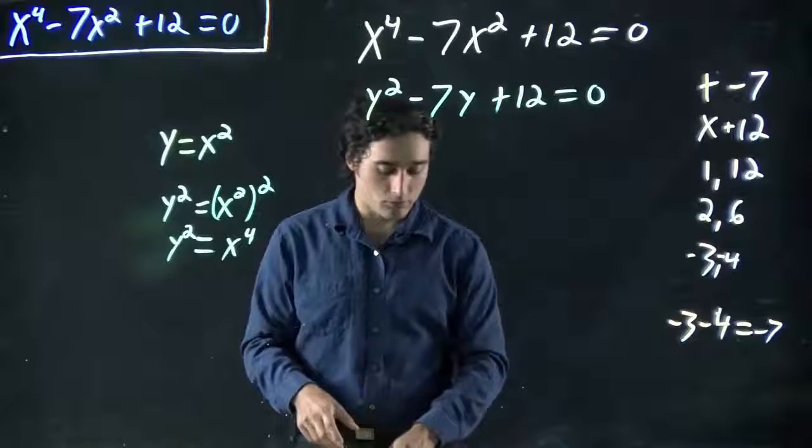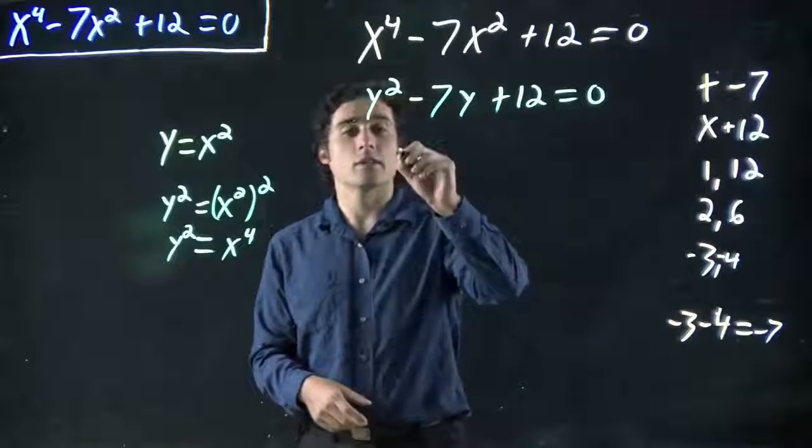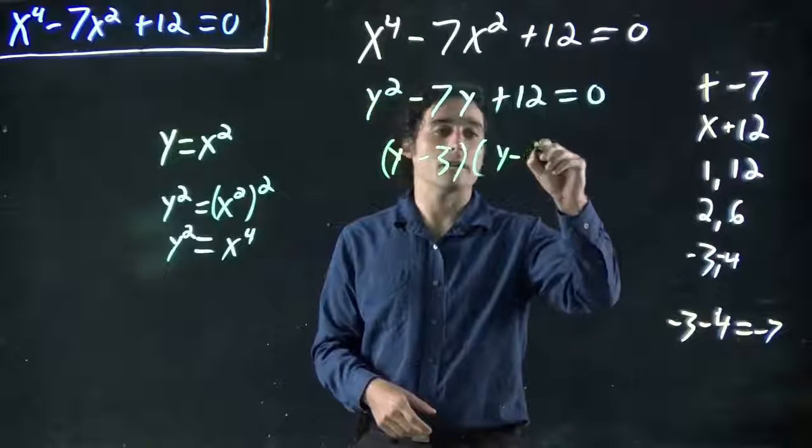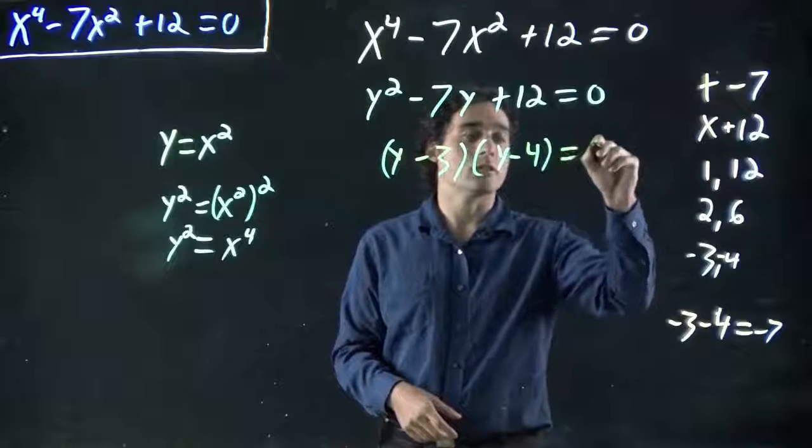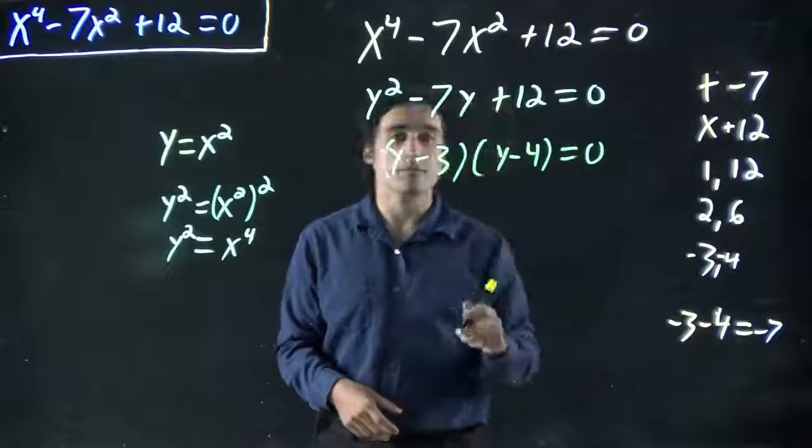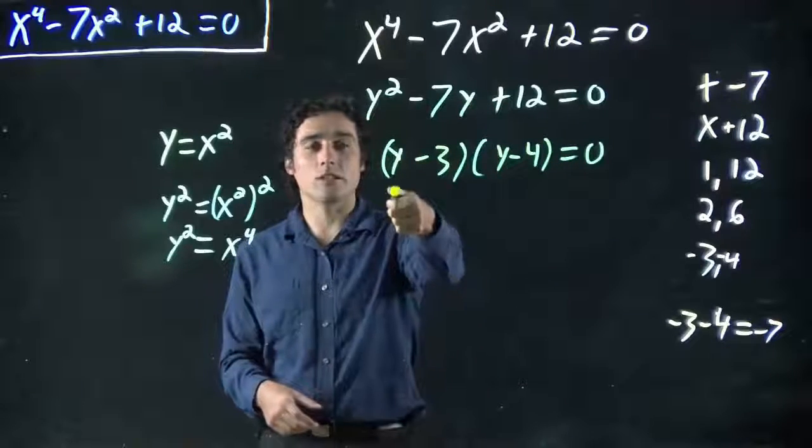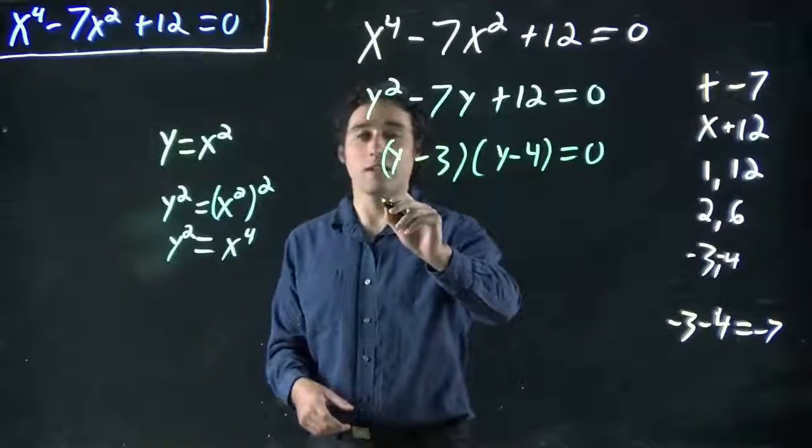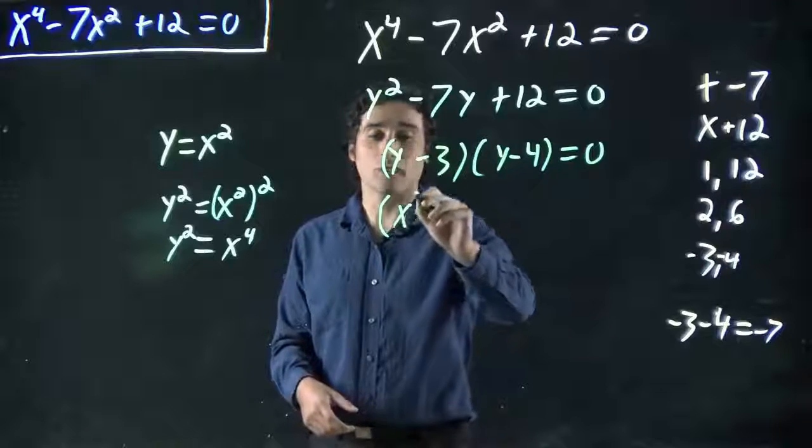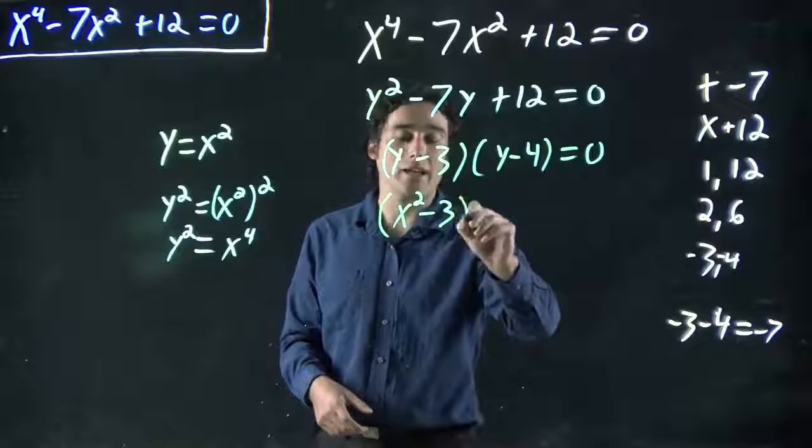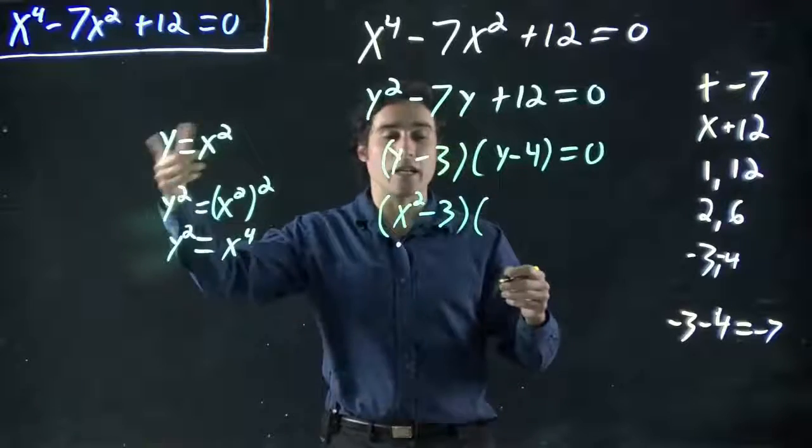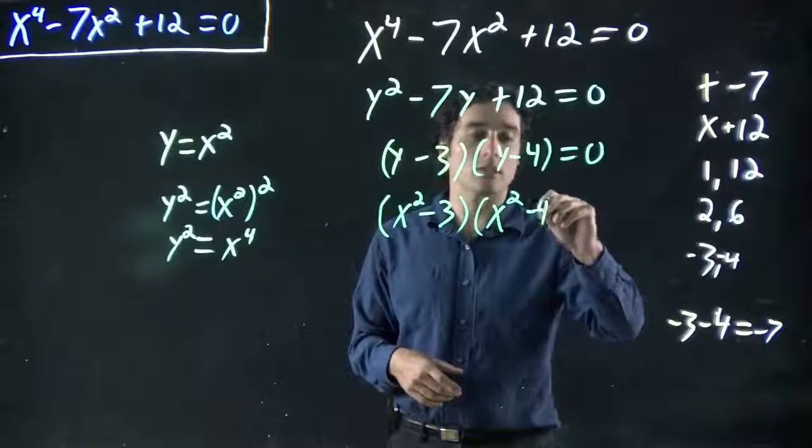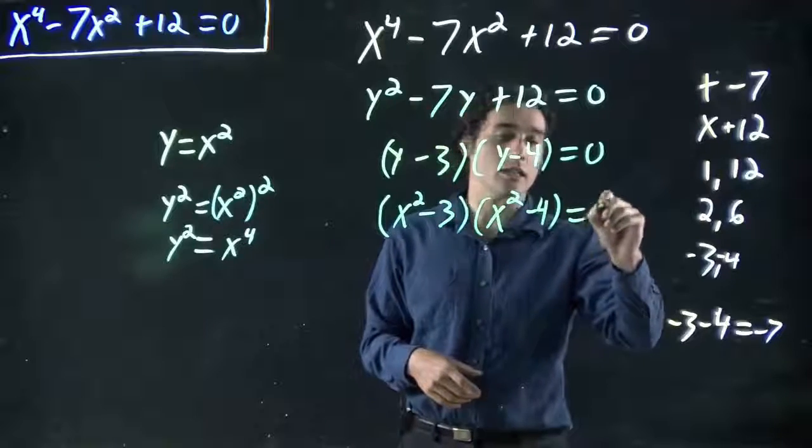And we can think, this would factor out to y minus 3 and y minus 4 equals 0. But, we didn't start with y, did we? So, we got to switch that back in. What we have instead, y is actually x squared. So, we're just subbing that back in. Before we've done the problem, we've got to undo our substitution. So, this is actually x squared minus 3, x squared minus 4 equals 0.